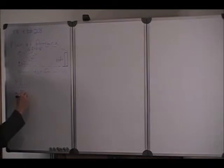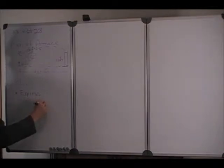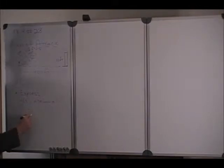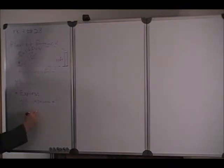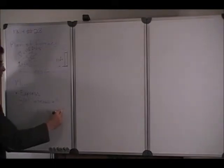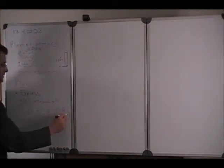So we want to express y of t in terms of the velocity, the magnitude of velocity, the angle, and time, and the acceleration of gravity, which in English units, which we're using, is 32 feet per second squared.